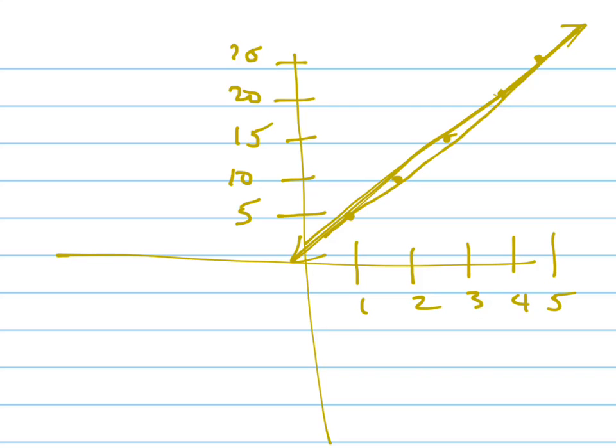When you plot the points and you connect them, it makes a line if it's linear. Because every time I go over one, I go up five. If I go over two, I would go up ten. If I go over three, I would go up fifteen.